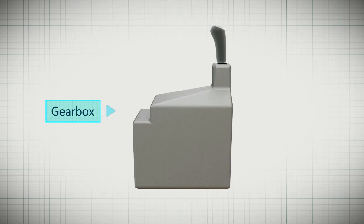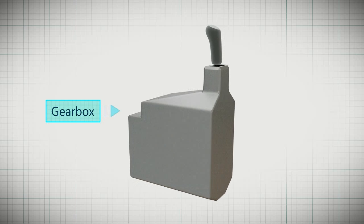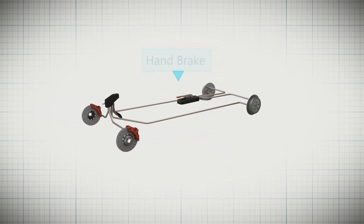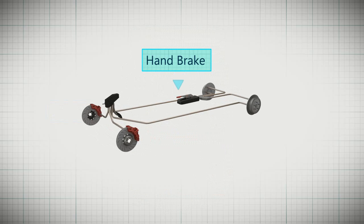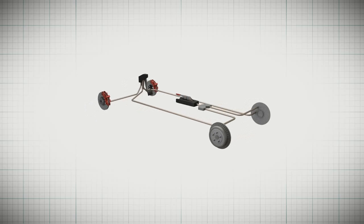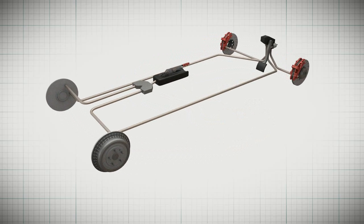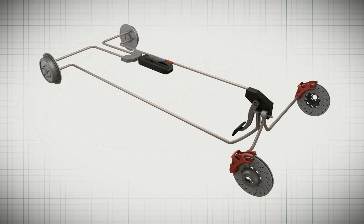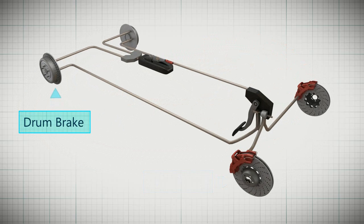The gearbox and clutch which are used by the driver are connected to the engine. The brake pedal and emergency hand brakes are connected through the lines. There is a booster, master cylinder and combo valve connected to the brake pedal. In the brake mechanism there are disc brakes in the front wheels and drum brakes in the rear wheels, connected by lines.